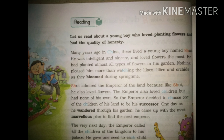Let us read about a young boy who loved planting flowers and had the quality of honesty. Many years ago in China, there lived a young boy named Shui. He was intelligent and sincere and loved flowers the most. He planted almost all types of flowers in his garden. Nothing pleased him more than watching the lilacs, lilies, and orchids as they bloomed - that means as they were in the flowering stage - during the spring season.